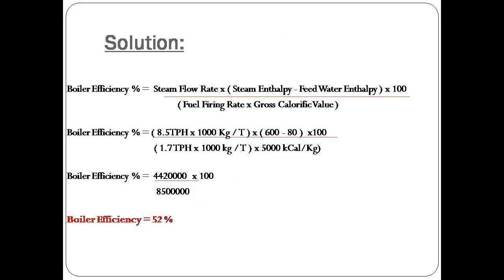Our formula is boiler efficiency equals steam flow rate multiplied by the difference of steam enthalpy and feed water enthalpy, divided by fuel firing rate multiplied by gross calorific value.